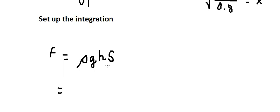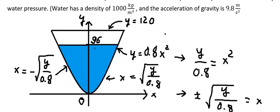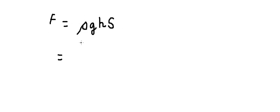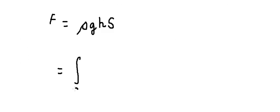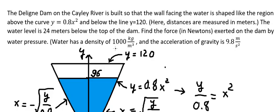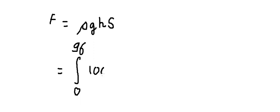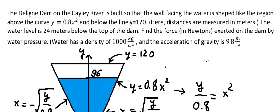Now to find the area, we use integration. Because of symmetry, we can multiply by 2. We set up the integration starting at 0 and stopping at 96. So the integral runs from 0 to 96. We include 1000 for density and gravity at 9.8.